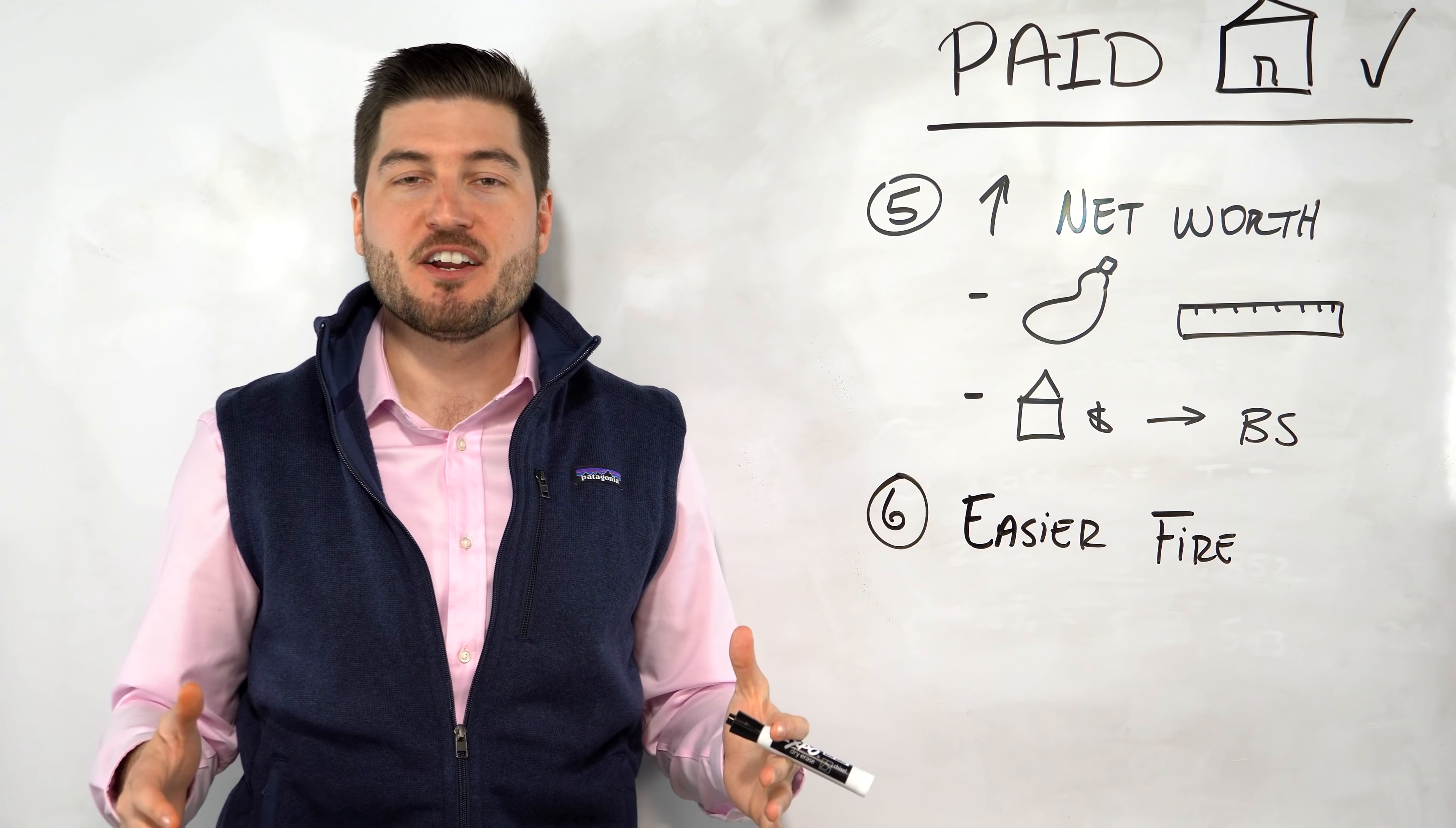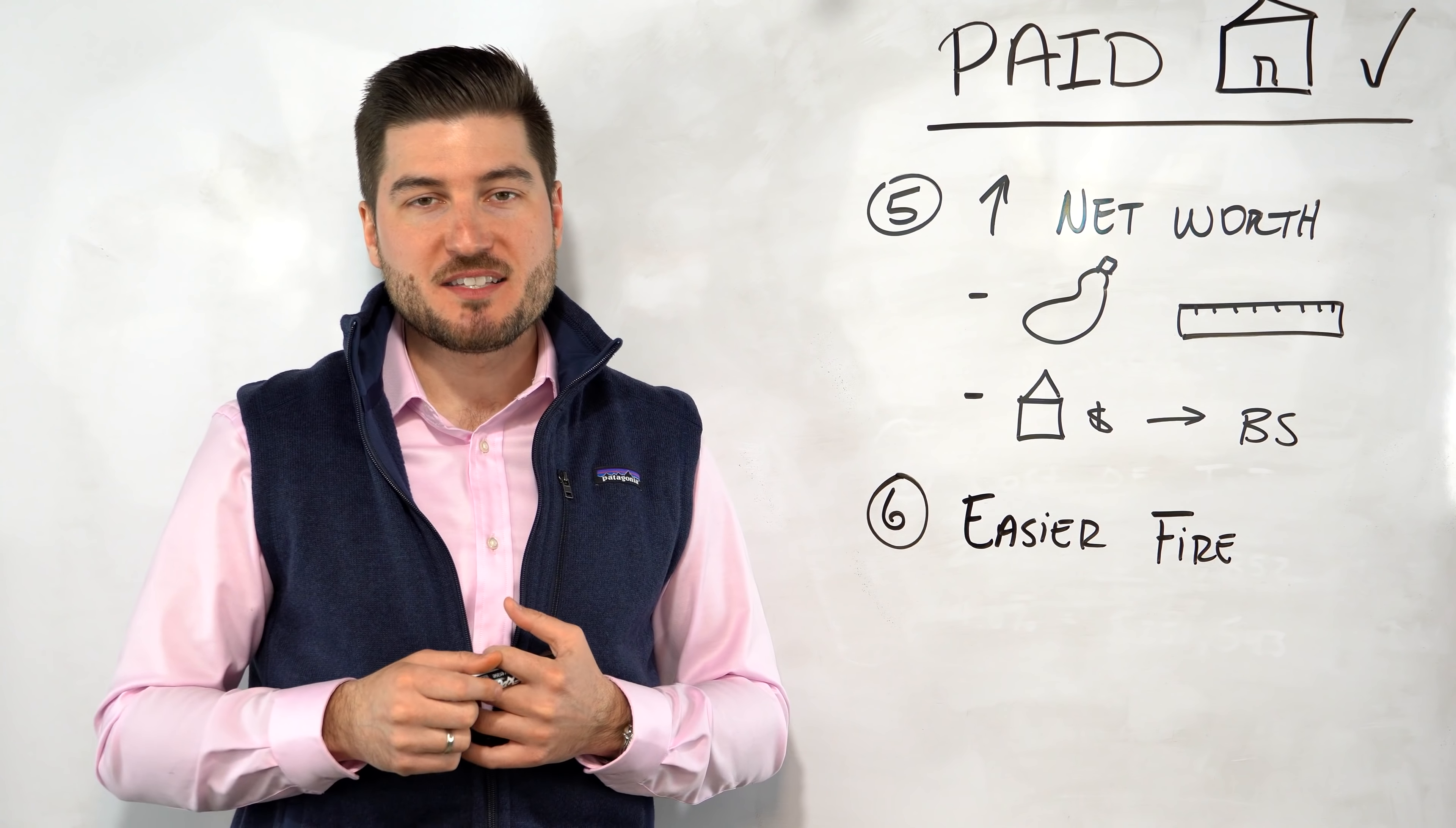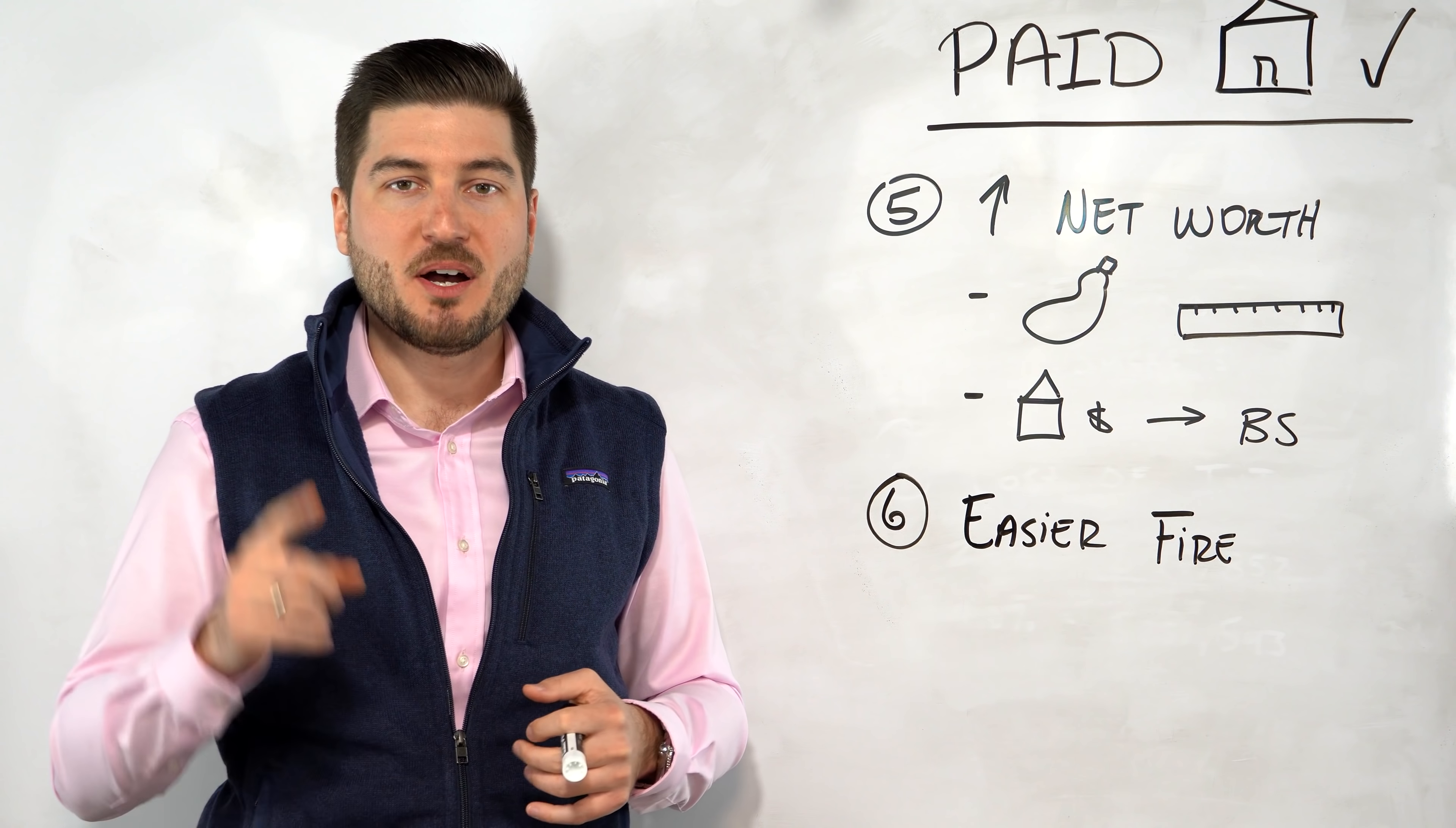Number six is you're easier to fire. I don't mean get fired, like getting fired by your boss or getting fired from your job. I'm talking about it's easier to reach financial independence, retire early status. The reason for this is because I alluded to this in number one. When you have lower monthly expenses, you need less money to retire. You need less income to retire. Let's take a look at an example. So if your monthly expenses are, let's say $4,000, if you meet this $4,000 in dividend payments, rental income, you know, side hustle, which we'll talk about later in this video, you are then financially free. You are covering that nut that we talked about in step number one.